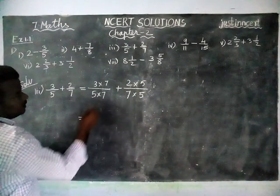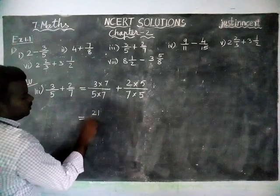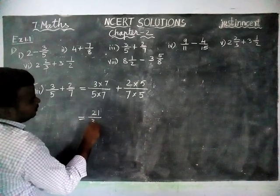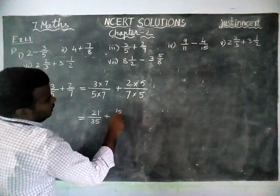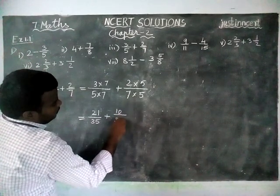Plus here 2 by 7, I am going to multiply it by 5 by 5. Is equal to 7 threes are 21 divided by 5 sevens are 35. Plus 2 fives are 10, 7 fives are 35.